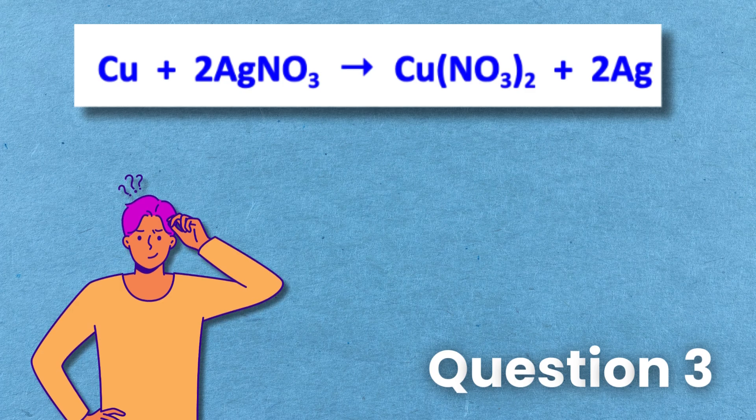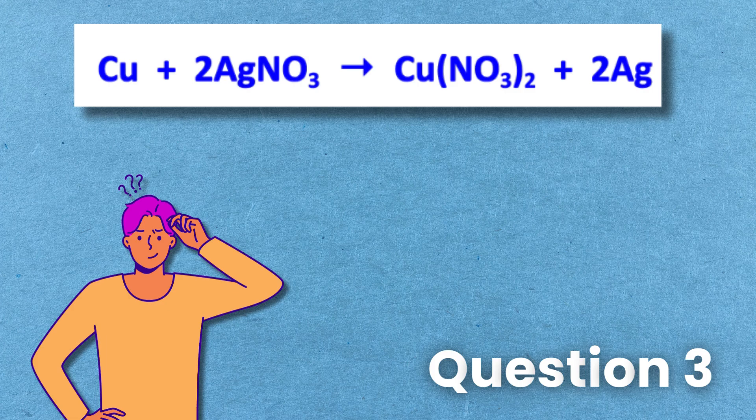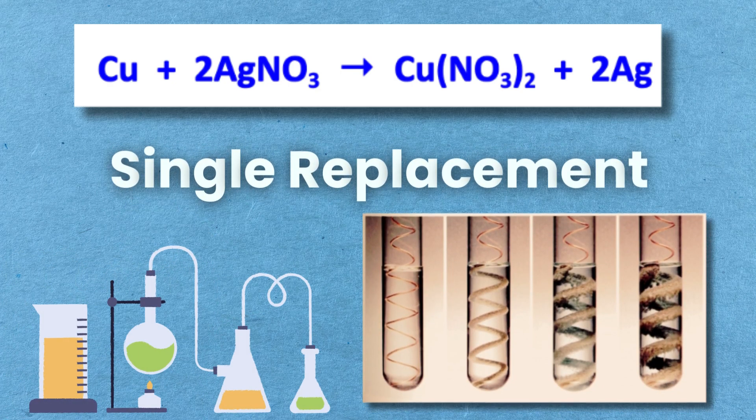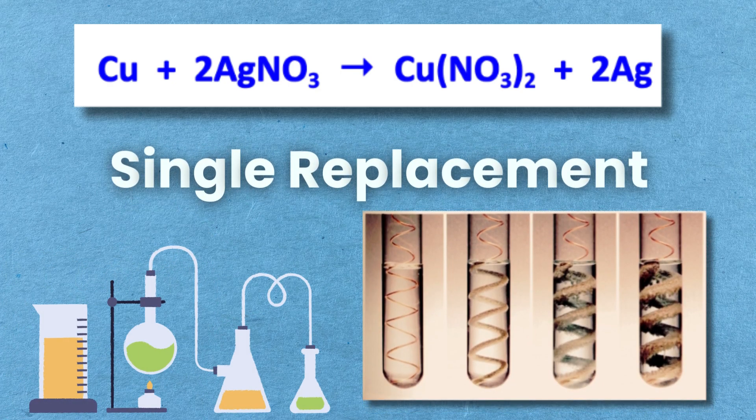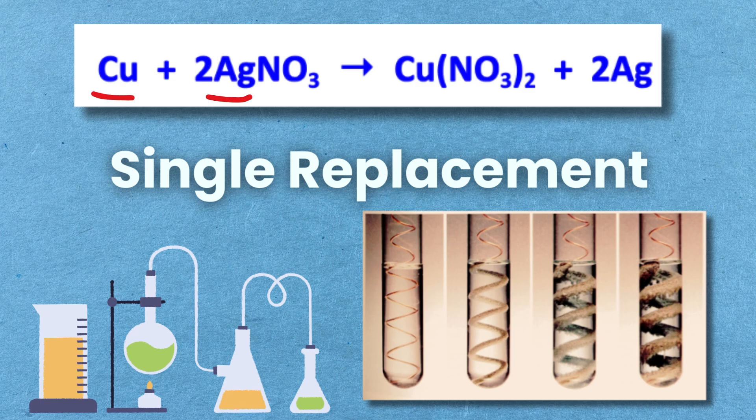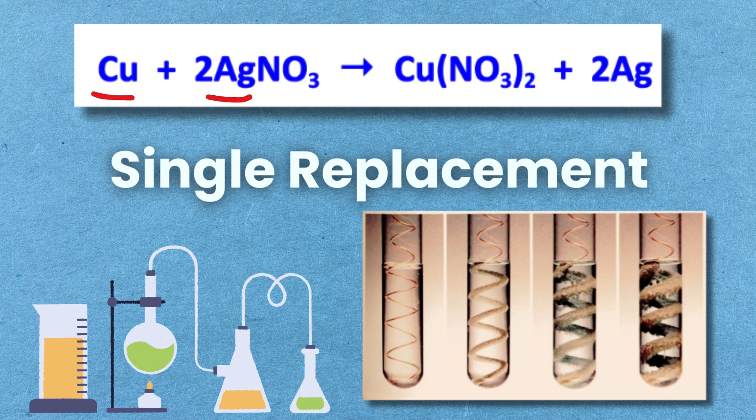Cu plus 2AGNO3 gives CuNO3 2 plus 2AG. This is a single replacement reaction. In this reaction, the copper replaces the silver in the silver nitrate to form copper 2 nitrate and silver is released.